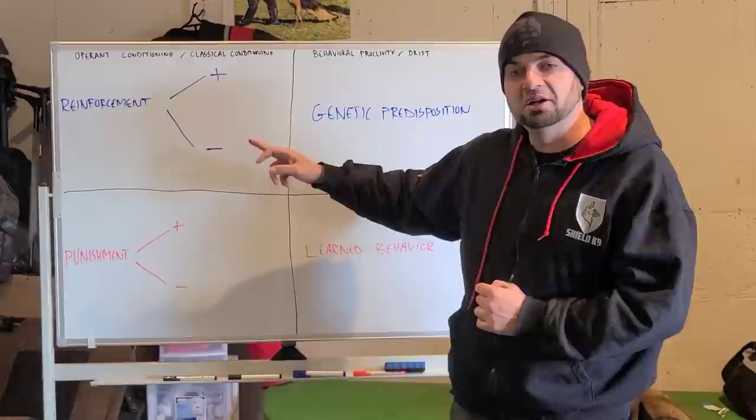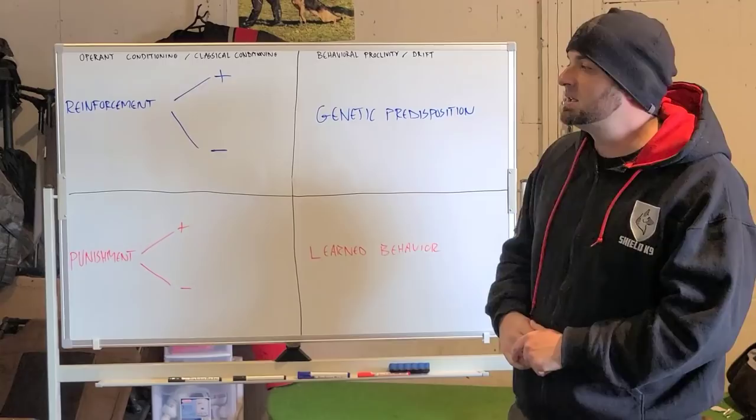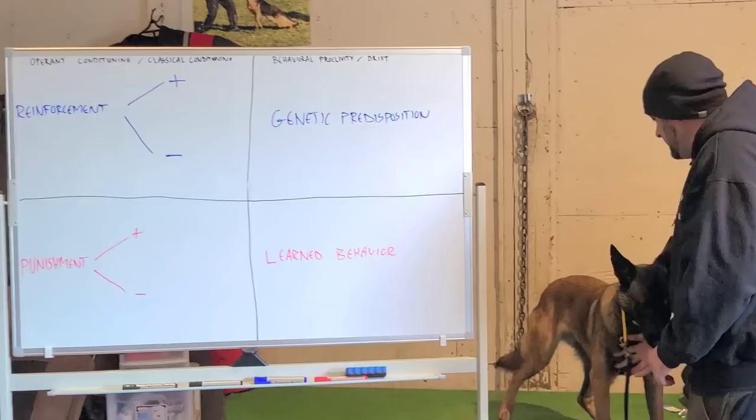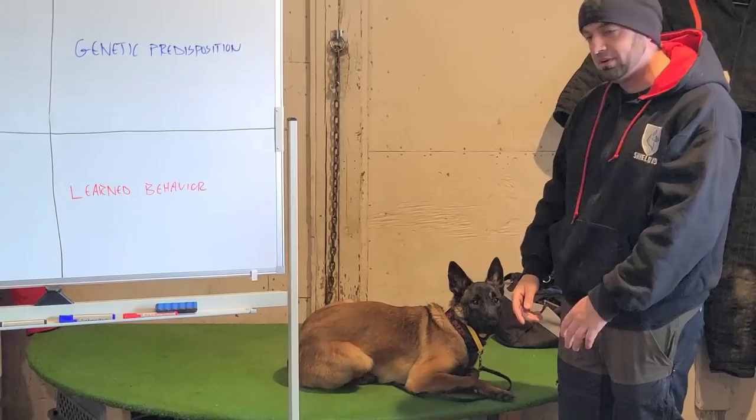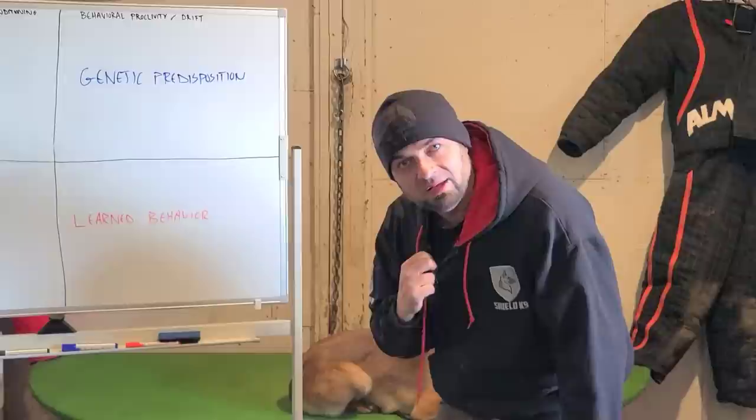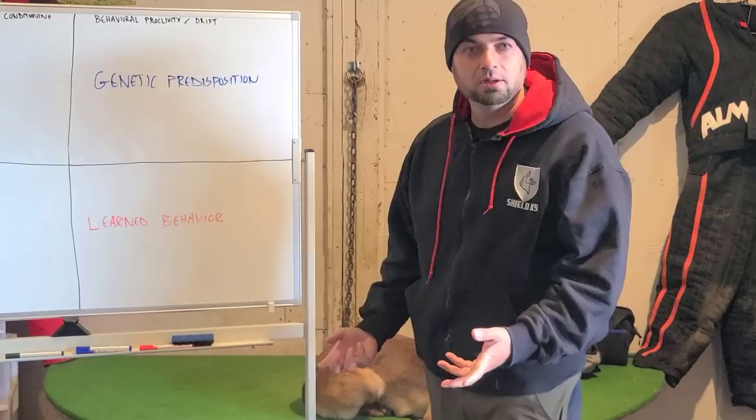Negative reinforcement is where people often start to get confused. Negative reinforcement is basically pressure to position. If I push down on a leash and create pressure and the dog lies down, that's negative reinforcement. I create a discomfort, she goes to the correct position, I remove the discomfort. So negative reinforcement is pressure to position; positive reinforcement is giving anything to the dog that the dog deems as pleasurable or desirable.